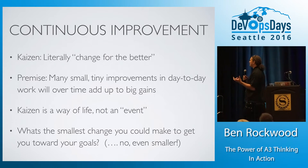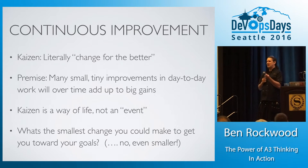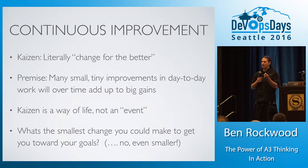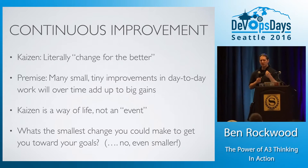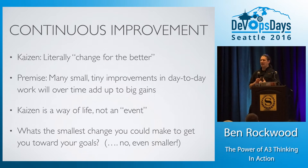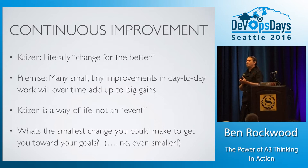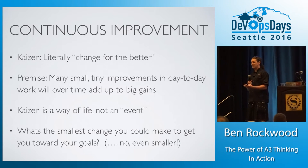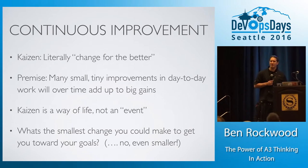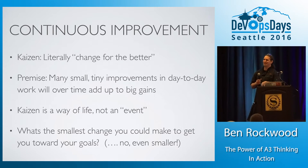So let's first talk about continuous improvement. What is continuous improvement? I'm really inspired by the idea of Kaizen. Kaizen literally in Japanese means change for the better. The premise is to make many small, tiny improvements day to day in practical, real-world work — not just on a whiteboard — that hopefully adds up over time to big gains. How do you lose 100 pounds? You lose one, and then another, and then another. How do you run a marathon? You run 100 feet, then a mile, then five miles. Not a new concept.